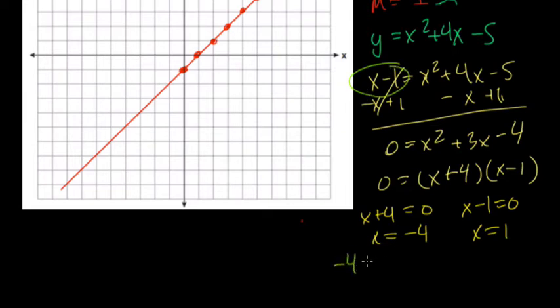So negative 4, the x value minus 1 is negative 5. So one of our meeting points is negative 4, negative 5. I'm going to mark that on here. 1, 2, 3, 4. Down 5, that's one of our points. And you would label it too.